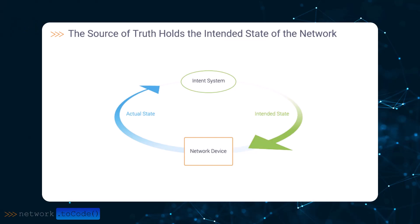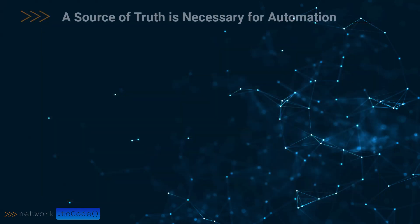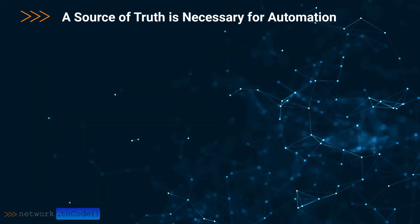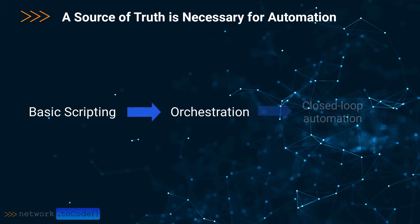The source of truth is the intended state. If the actual doesn't match its intended state, then the network is wrong. Having the source of truth is necessary for network automation, especially as one moves beyond basic scripting to orchestration and even closed-loop automation.